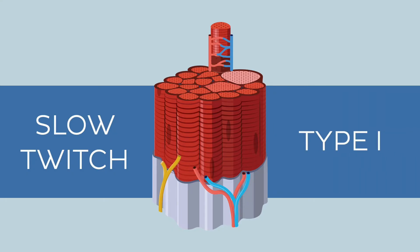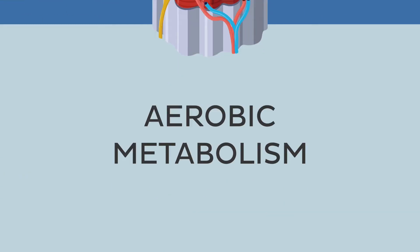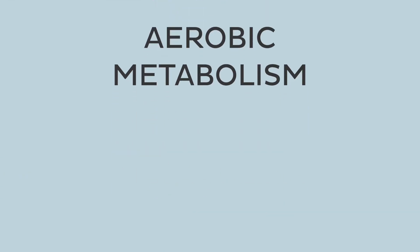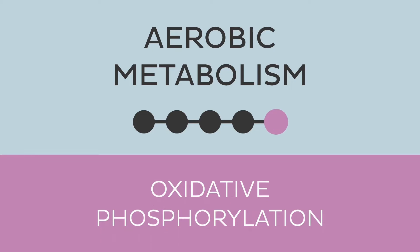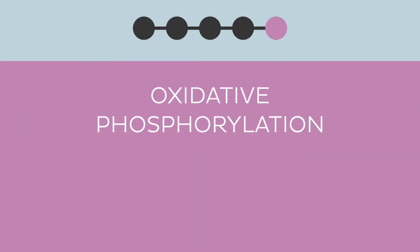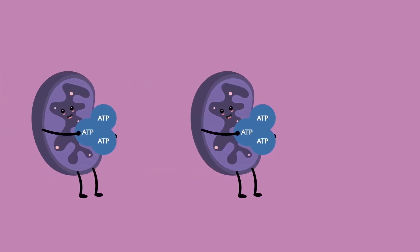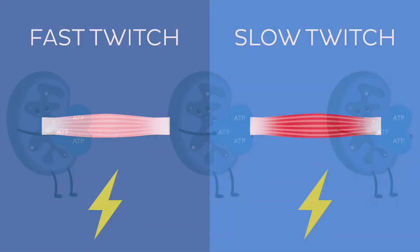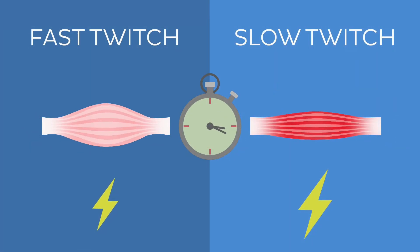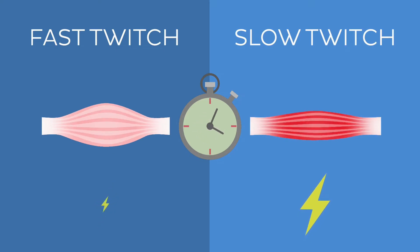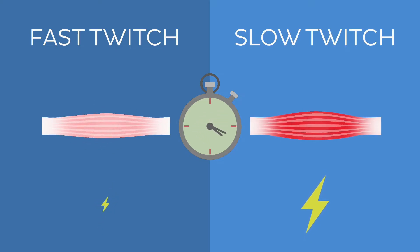In slow twitch fibres, ATP — the energy currency of our muscles — is produced from aerobic metabolism via oxidative phosphorylation. These fibres have an abundant amount of mitochondria, the powerhouse of the cell, which turns out ATP. Therefore, they are capable of sustained contractions over an extended period without being easily fatigued, due to the large amounts of ATP they can produce.